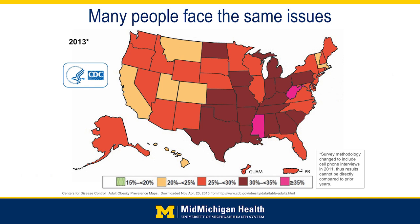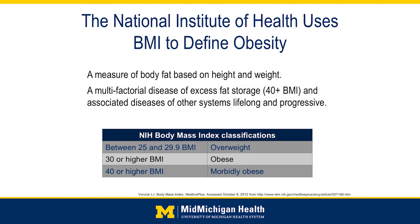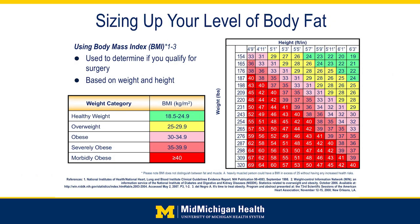We use the body mass index to define obesity — a ratio based on somebody's height and weight. You find your height on the top line of the chart, follow it down to where the weight intersects, and that gives the BMI. A healthy BMI is 18 to 25, overweight is 25 to 30, obese is 30 to 35, severely obese is 35 to 40, and morbidly obese is 40 or greater.